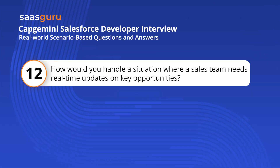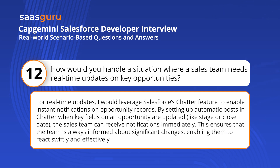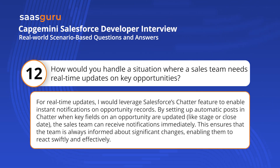How would you handle a situation where a sales team needs real-time updates on key opportunities? For real-time updates, I would leverage Salesforce's Chatter feature to enable instant notifications on opportunity records. By setting up automatic posts in Chatter when key fields on an opportunity are updated, like stage or close date, the sales team can receive notifications immediately, ensuring that the team is always informed about significant changes and enabling them to react swiftly and effectively.